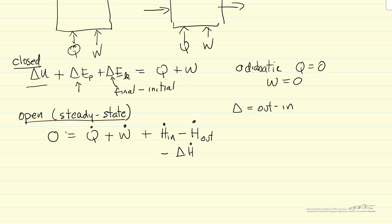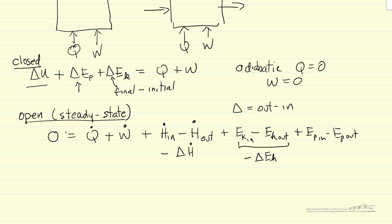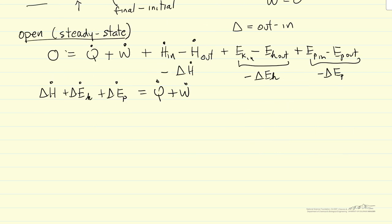Likewise, we have two more terms: kinetic energy coming in plus kinetic energy out, and potential energy in and potential energy out. These are expressed as minus delta E kinetic energy and minus delta E potential energy. So let me rearrange this equation — this is the energy balance for an open system at steady state.